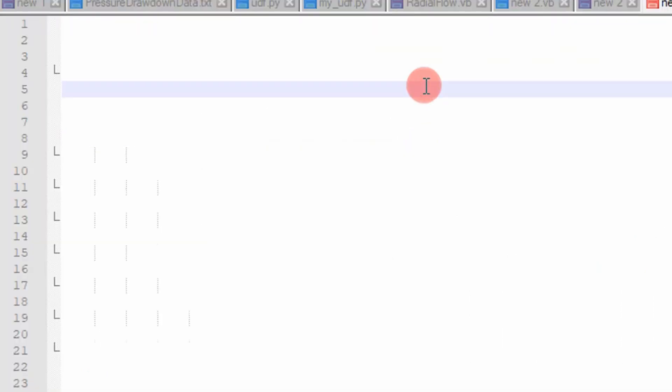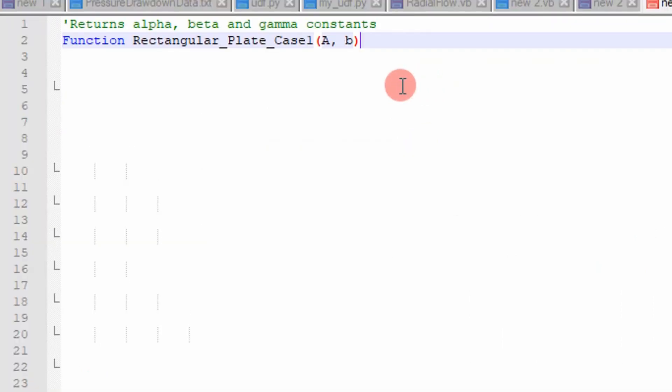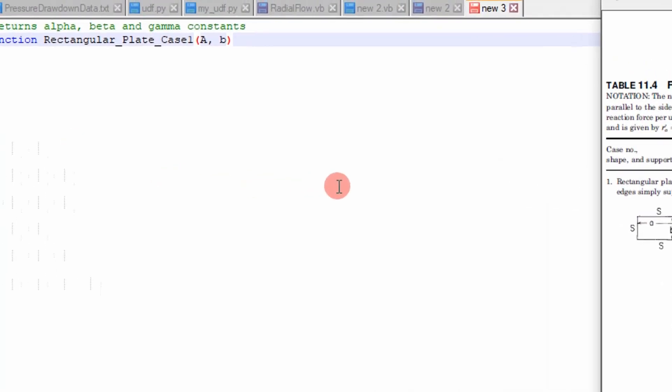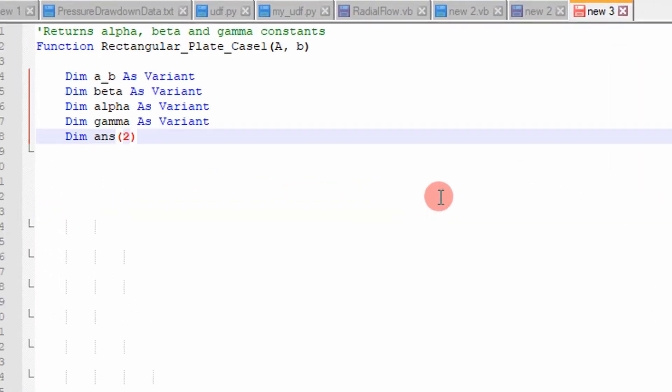So the first step is to declare a function. We declared it rectangular underscore plate underscore case one. And it takes two parameters, the long length and short length of our rectangular plate as given in the table over here, a and b. And then we define some variables.